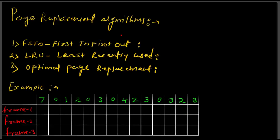Today we will learn about the page replacement algorithm. A page is basically a part of a program. Because programs can be very large and memory has a limited size, programs are required to be loaded in the form of partitions. Whatever partition is required will be loaded first as a page. Pages are loaded into main memory.